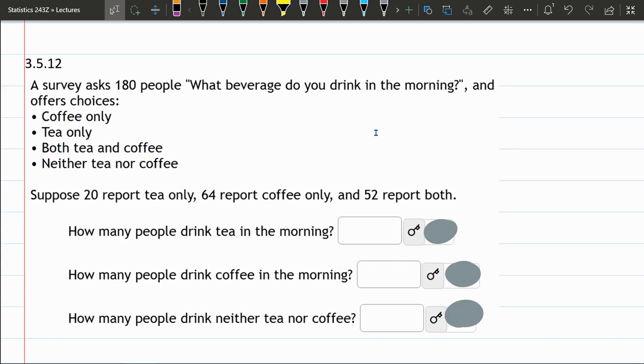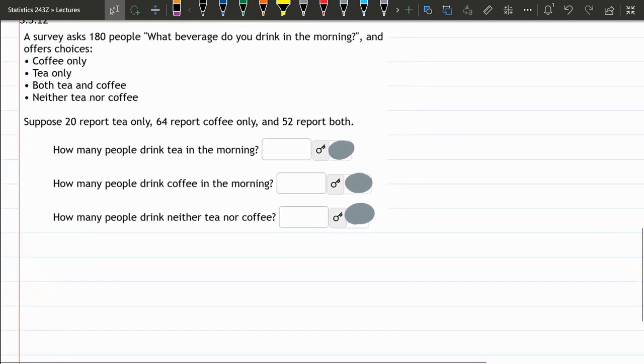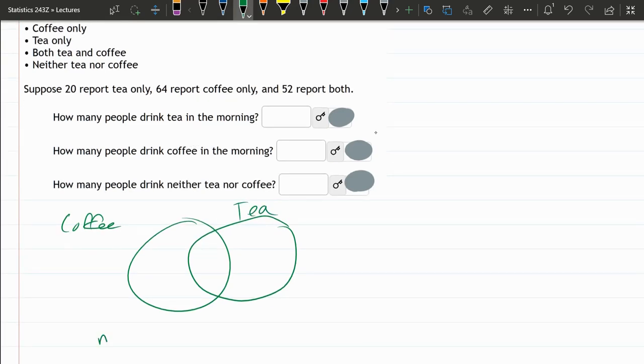So we need to draw this table, and I'm going to zoom out a little bit here. All right, so we have coffee, tea, and none or neither.